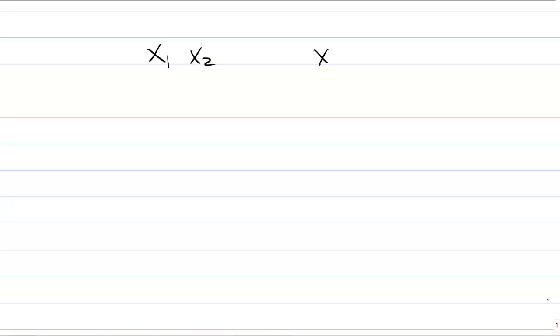In the proof of the theorem, we've defined 12 new variables, x1 through x12. Each variable represents the number of people in the group born during a particular month. So x1 is the number of people born in January, x2 the number born in February, and x12 the number born in December.